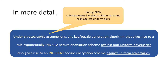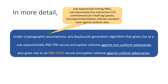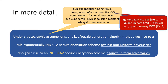Specifically, in order to upgrade any key generation algorithm for a CPA scheme into one for a CCA1 scheme, we assume the existence of hinting PRGs as well as sub-exponential keyless collision resistant hash functions against uniform adversaries. In order to achieve CCA2 security, we additionally assume the existence of sub-exponential non-interactive CCA commitments for small tag spaces. These can be obtained based on time-lock puzzles with sub-exponential security, or alternatively from quantum-hard one-way functions and classical-hard but quantum-easy one-way functions with sub-exponential security.